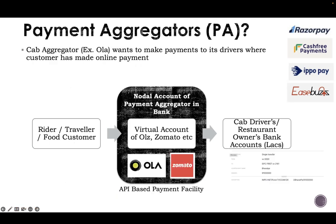Here's an example: you take a ride and pay money to Ola through an online method. The driver will not get the funds immediately — until the driver gets the funds, the money lies with the payment aggregator. Let's say one lakh people have taken a ride; the money of one lakh people will be with Ola for some time inside a virtual account. When Ola says to make a payment to the drivers, the payment aggregator sends all the money to the different drivers.